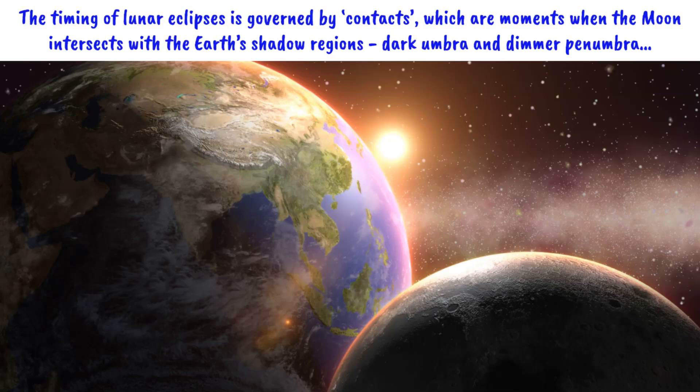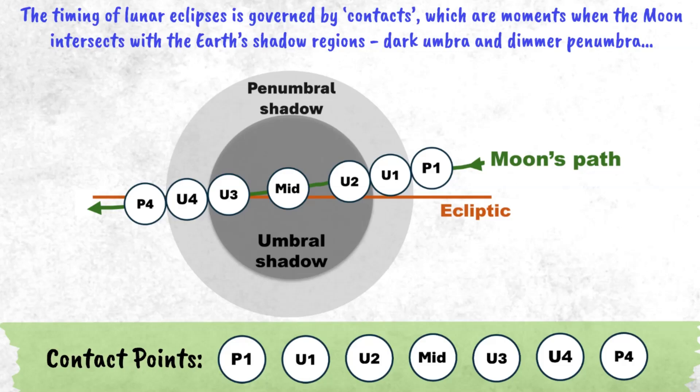To enhance our understanding of the Moon's trajectory through Earth's shadow regions, it's crucial to examine the timing of lunar eclipses. This timing is determined by its contacts — the specific moments when the Moon intersects with Earth's shadow regions, namely the dark umbra and dimmer penumbra. These contact points, P1, U1, U2, mid, U3, U4, and P4, are illustrated in the diagram.